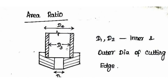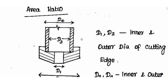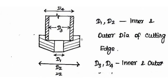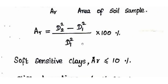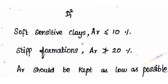D3 and D4 are the inner and outer diameters of the sampling tube. For soft sensitive clay, the area ratio should be less than or equal to 10% as per IS code. For stiff formation, the area ratio should not be greater than 20%. So the area ratio should be kept as low as possible.